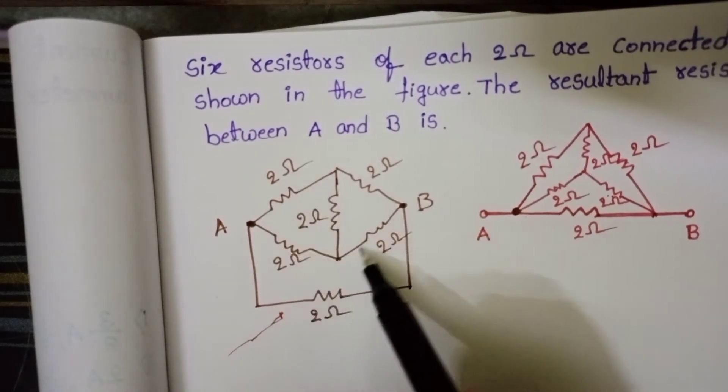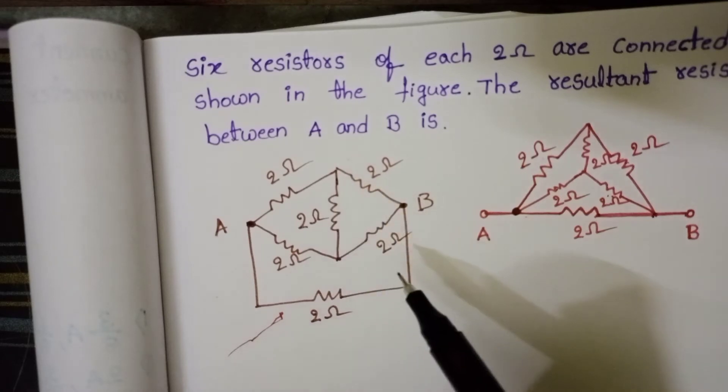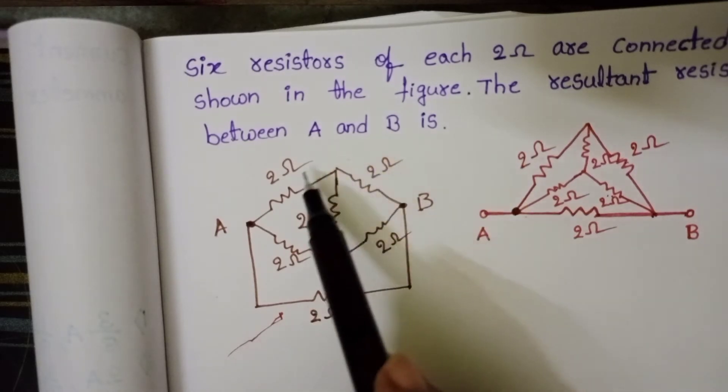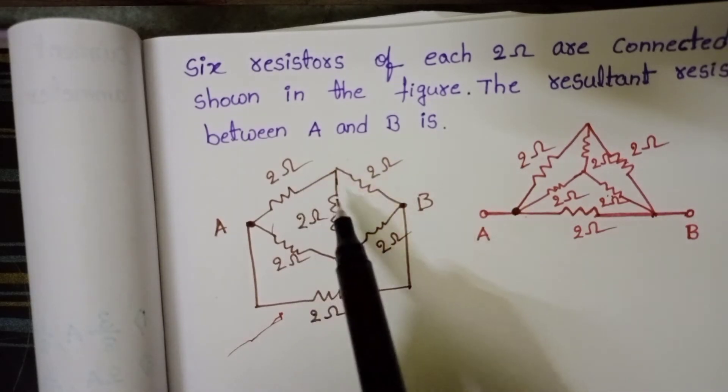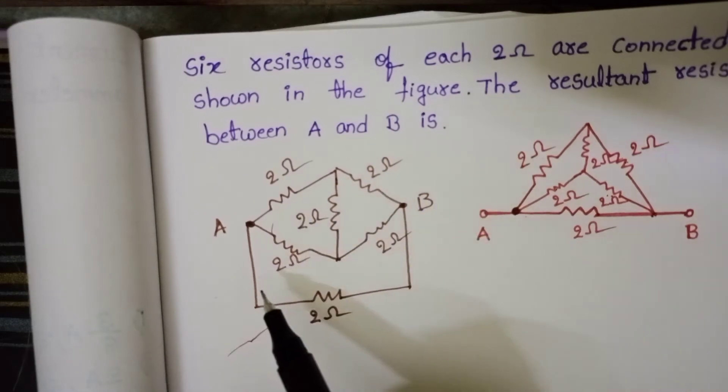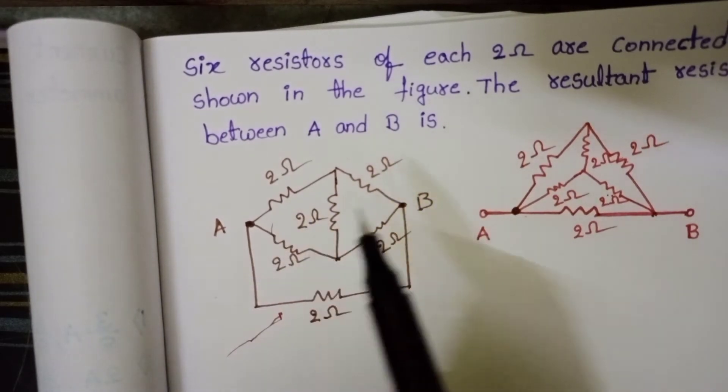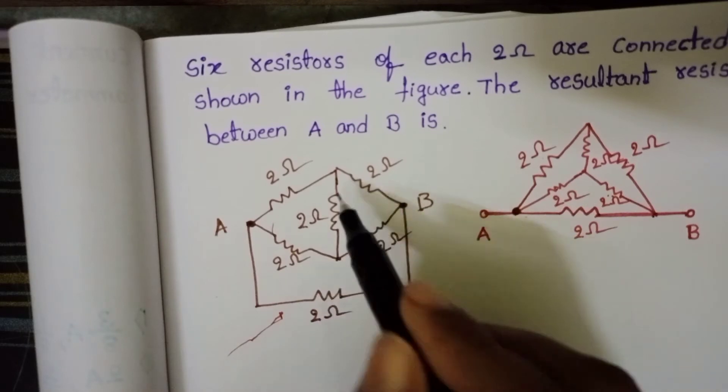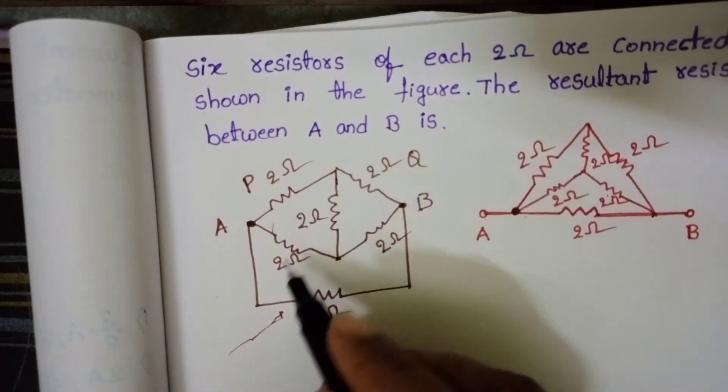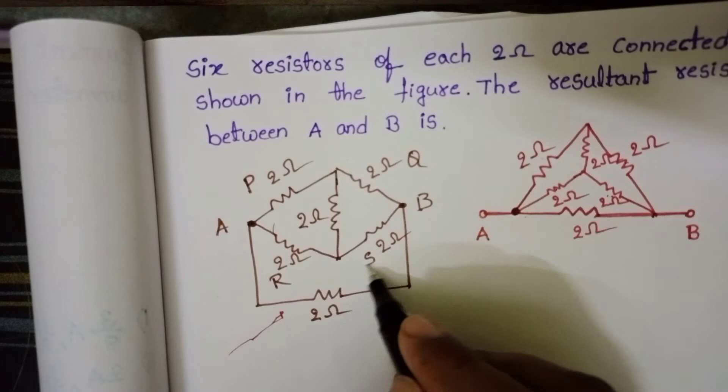This part of the circuit is like a Wheatstone bridge. So now check the bridge, either this is balanced Wheatstone bridge or not. In case of the balanced Wheatstone bridge, these 4 resistors - name this resistor P, Q, R, S.